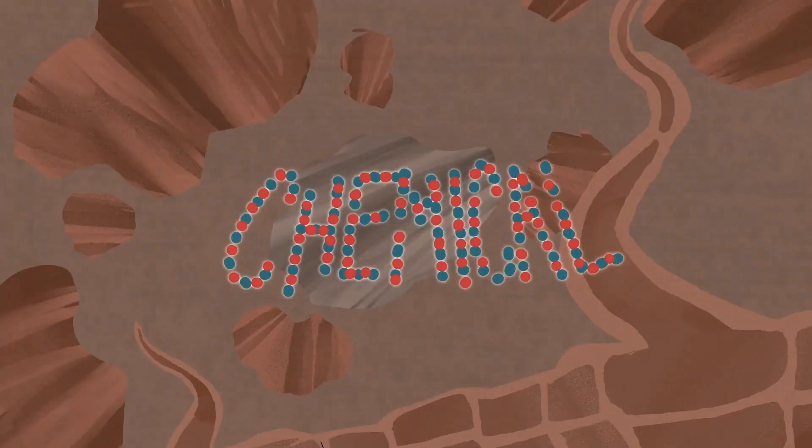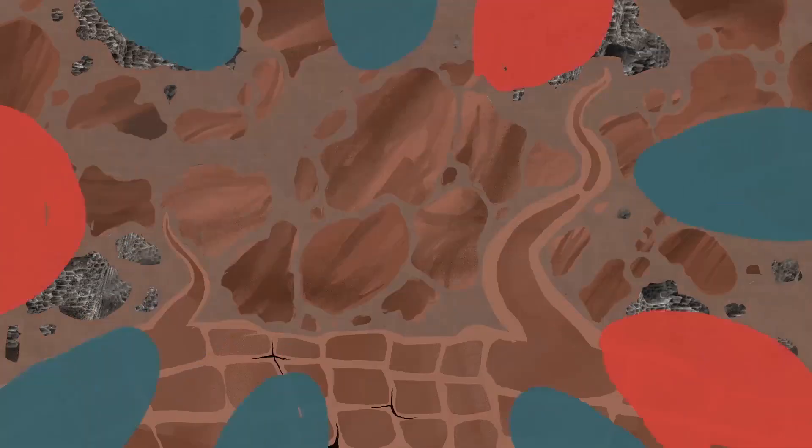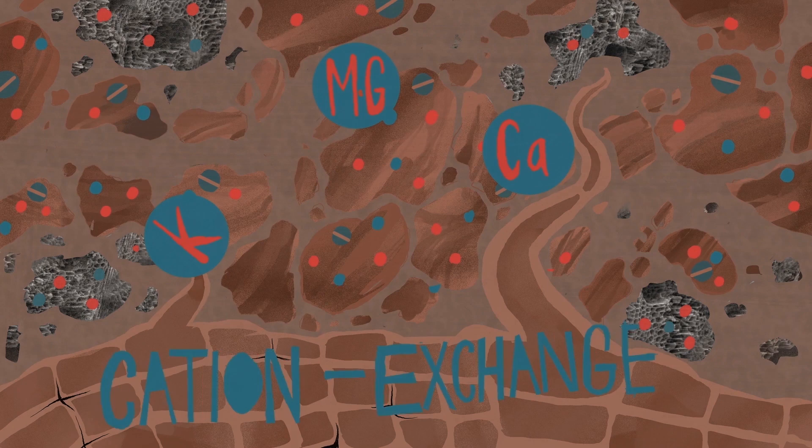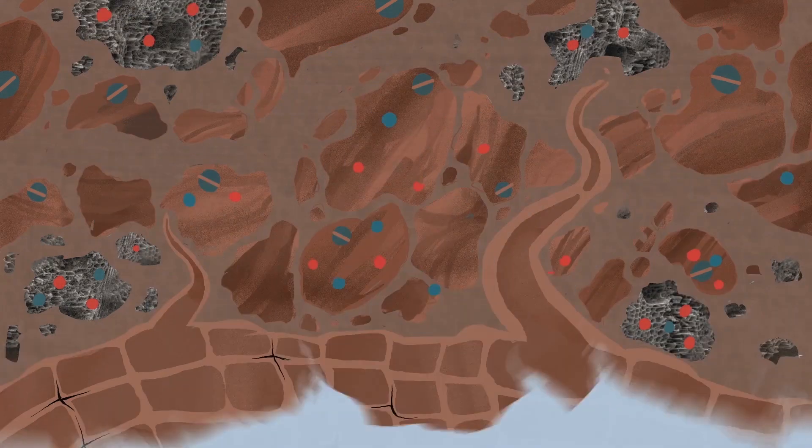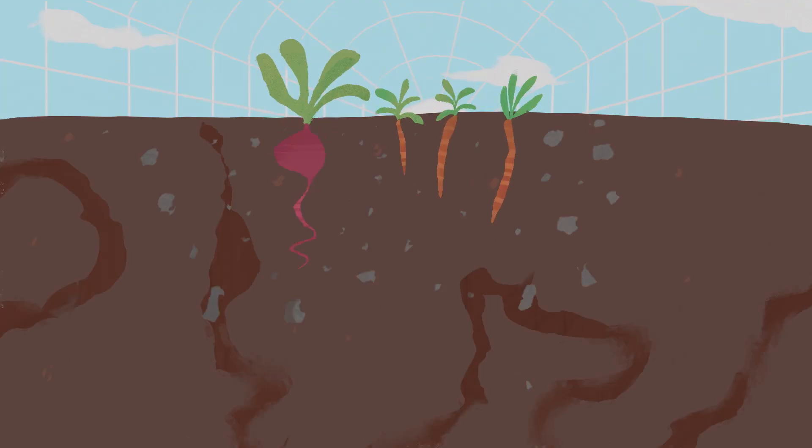Chemical. Biochar is very high in carbon, which is good for a process called cation exchange, which essentially means more nutrients are retained in the soil and available for plant roots.